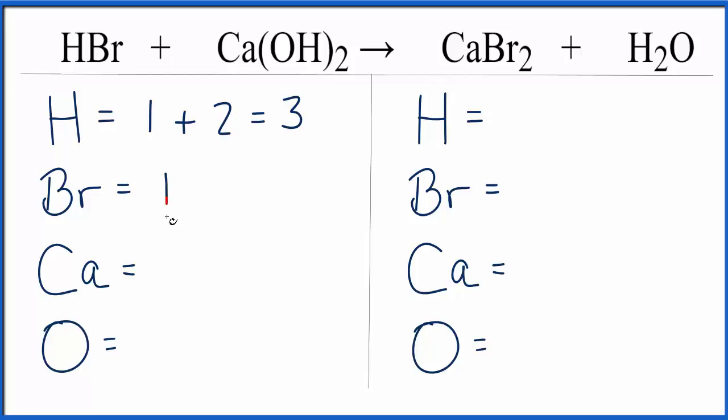We have one bromide. We have one calcium. And again, this two goes to everything. So we have two times one. We have two oxygen atoms.